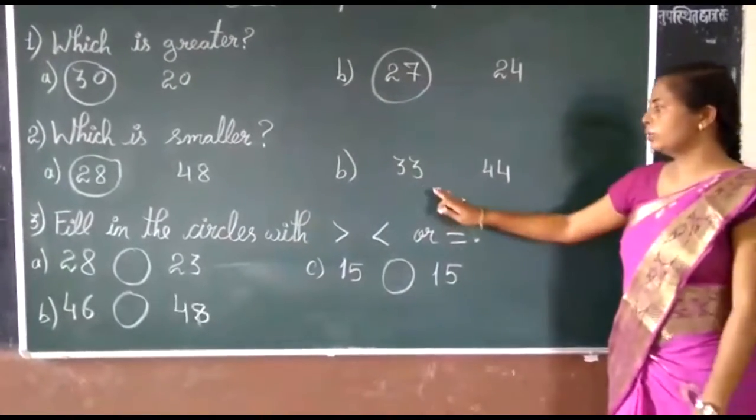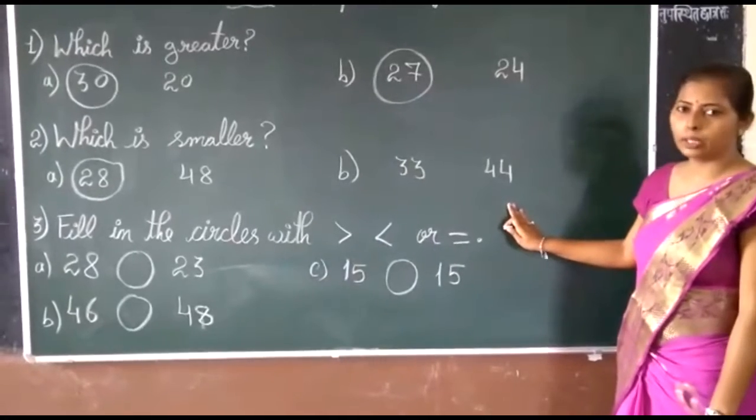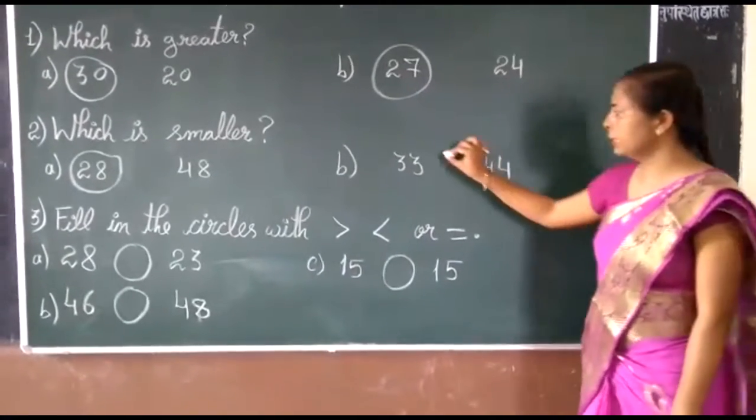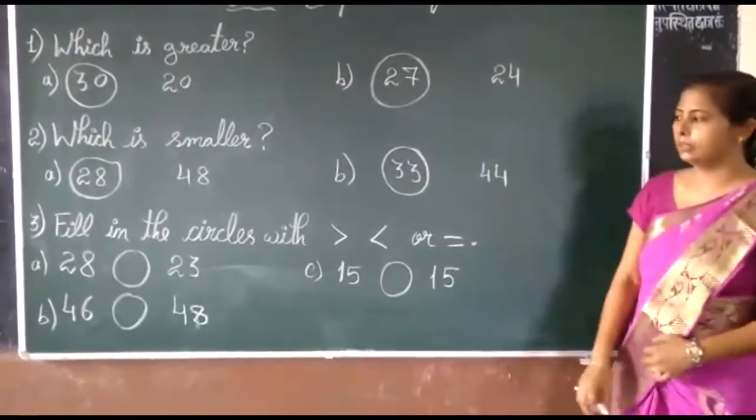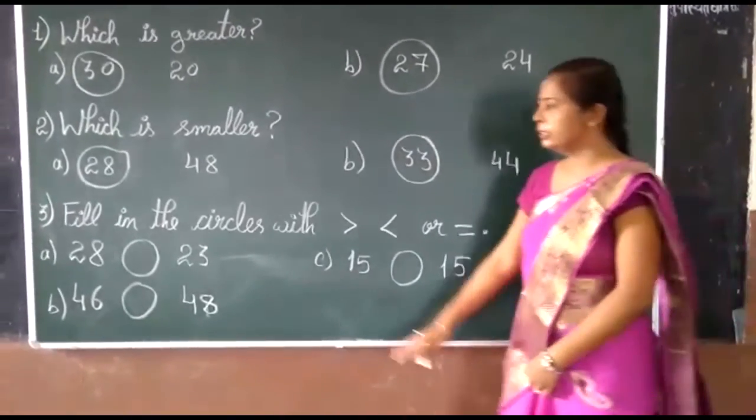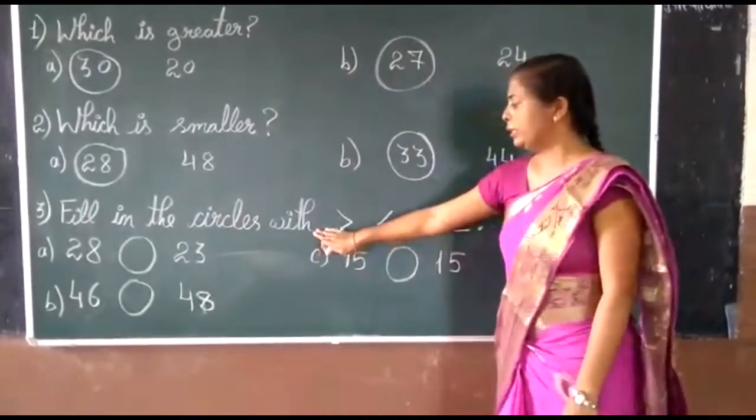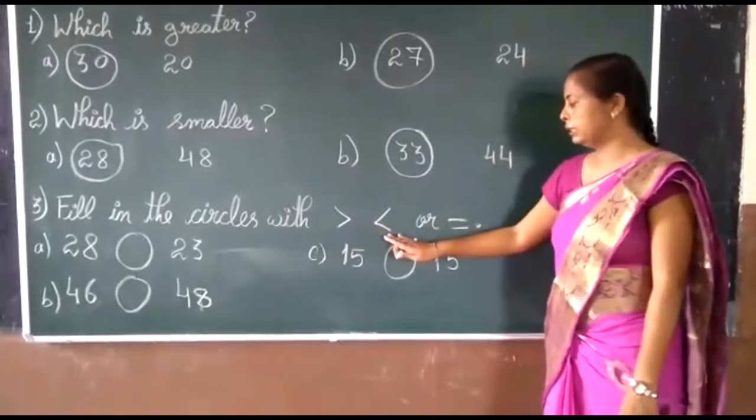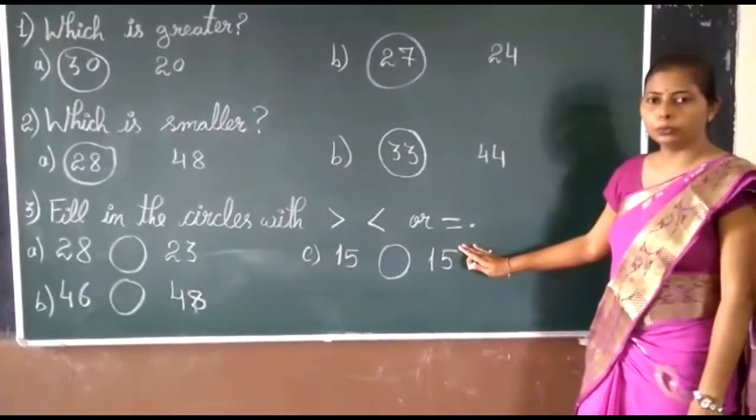Next is 33 and 44. So which is the smaller number? 33 is the smaller number. So circle the number. Now next, fill in the circles with greater than, less than, or equal to.